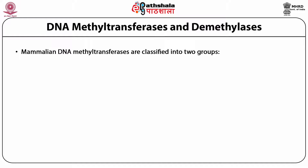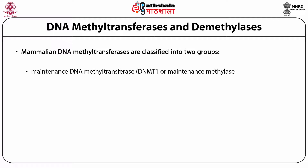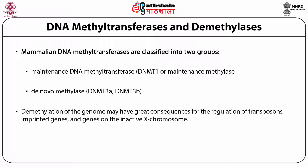DNA methyltransferases are classified into two groups. First is the maintenance DNA methyltransferase, abbreviated as DNMT1, which is highly active in methylating hemimethylated DNA — meaning methylated in one strand — thus providing the methylation pattern to the newly replicated daughter strand based on the parent strand. Second is the de novo methylase, abbreviated as DNMT3A and DNMT3B, a recently identified enzyme that adds a methyl group to unmethylated CpG base pairs, resulting in the creation of a new hemimethylated and then fully methylated CpG. Demethylation activity — the removal of a methyl group from methylated DNA — still remains uncertain, with two probable processes: a passive mechanism whereby methylation is not maintained during DNA replication, and an active mechanism catalyzed by an as yet unidentified DNA demethylase.